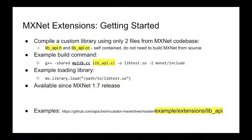To load your custom library into MXNet at runtime, there are a few different APIs. Here's an example in Python where you pass in just the path on disk to your library and MXNet loads it, finds the custom components in it, and makes them available. MXNet extensions has been available since the 1.7 release — a project we started back at the beginning of 2019, and we're still actively adding new features. There's a link at the bottom to some examples on GitHub to help you get started.